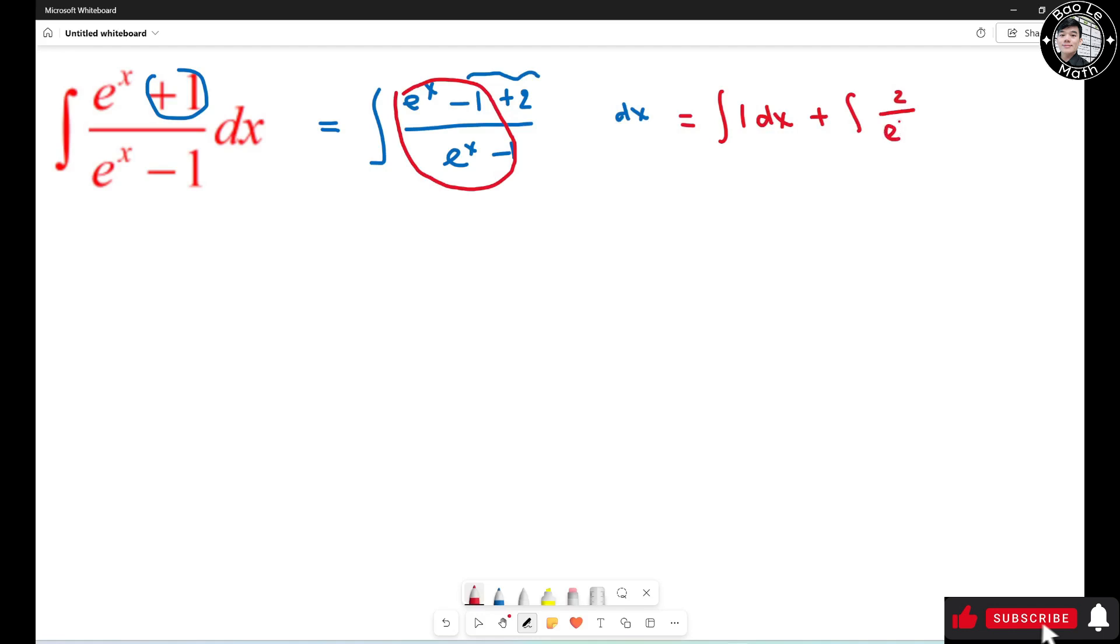The first one is very simple. I need to calculate the second one, so I call this I. So I have I equals the integral of 2 over e to the x minus 1 dx.